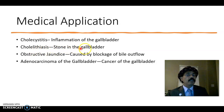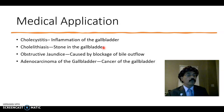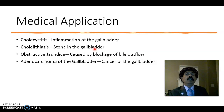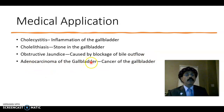Cholelithiasis — stone formation in the gallbladder — especially in people after the age of 40 or 50, fatty individuals may have cholesterol gallstones, usually seen more in females. Gallstones may also occur in hemolytic anemia like thalassemia or sickle cell anemia, producing pigment stones. Obstructive jaundice is caused by blockage of bile outflow. Adenocarcinoma of the gallbladder is cancer of the gallbladder. That's all about the histology of the gallbladder.